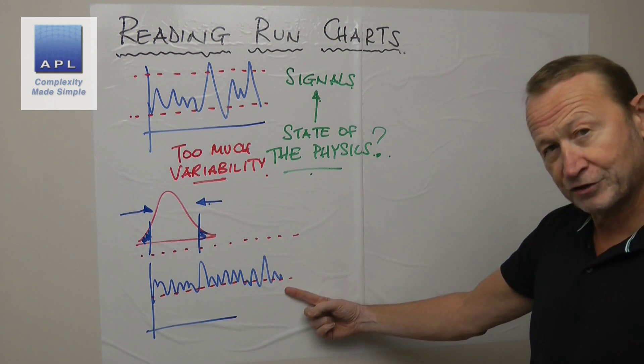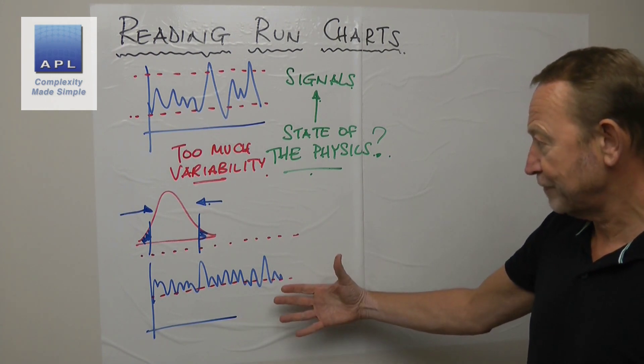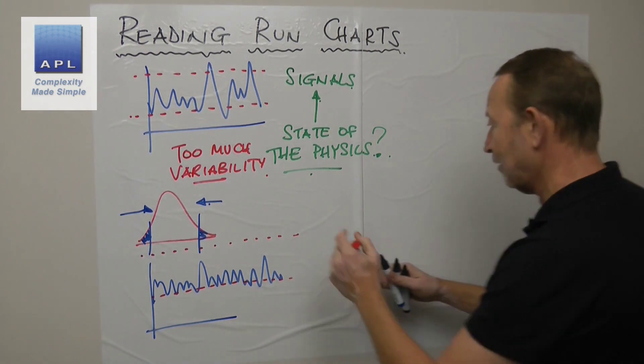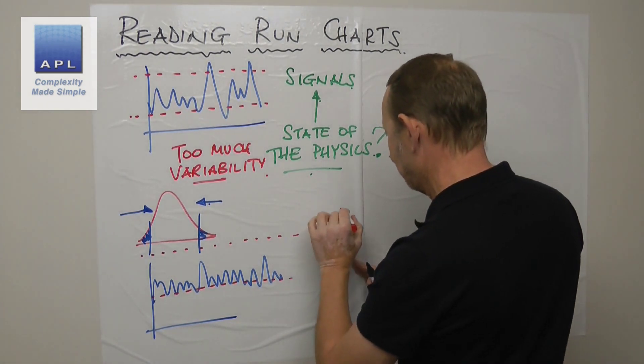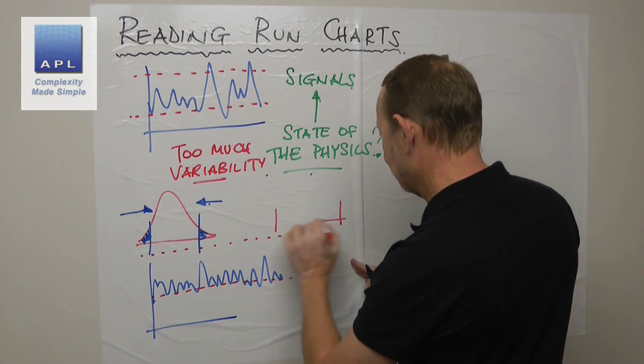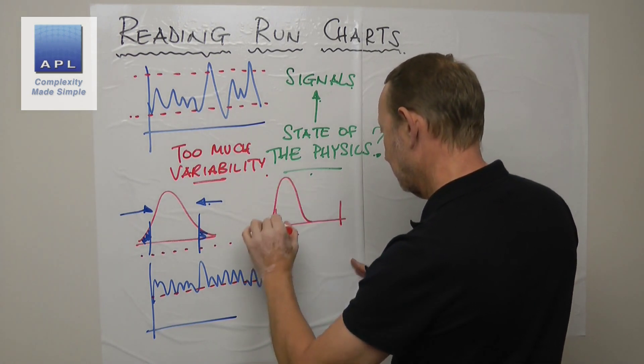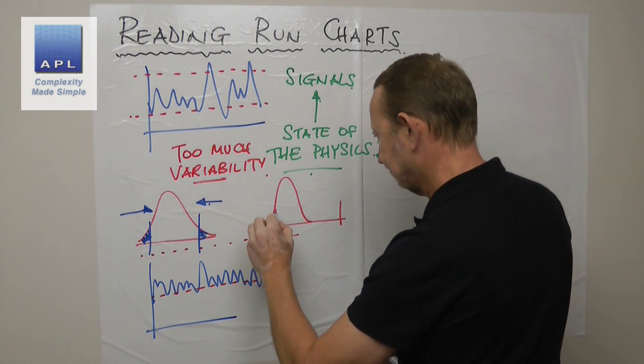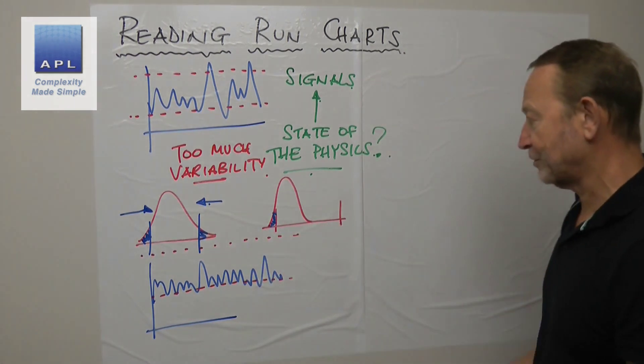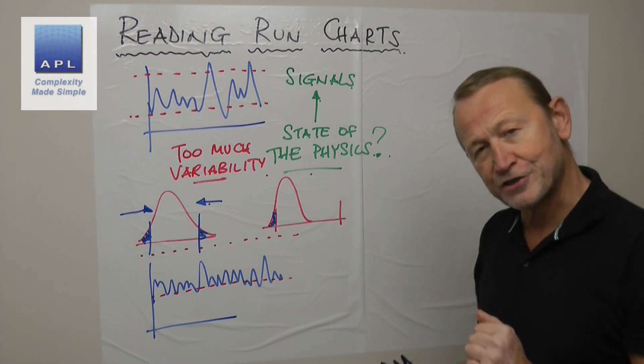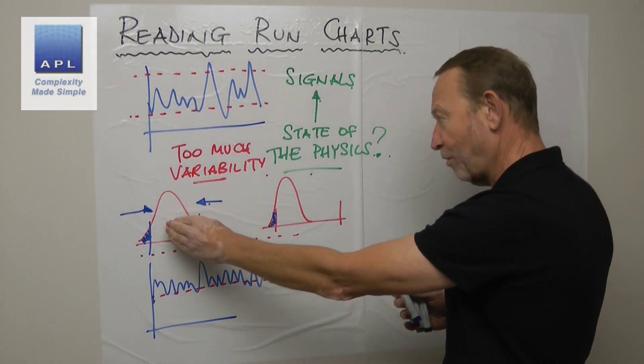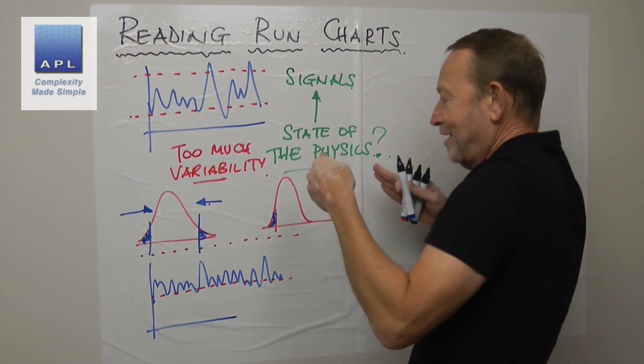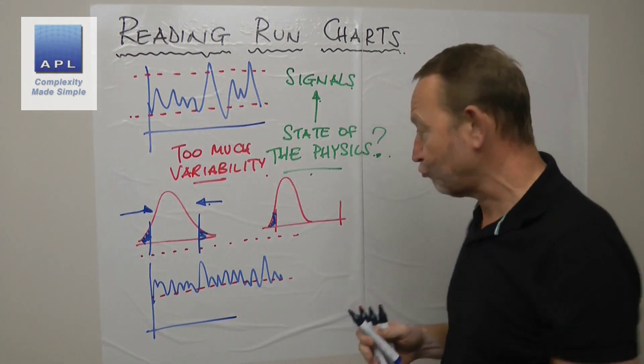What's the state of your physics? Well the state of your physics is you're off target. We're sitting on the lower tolerance and I've got defects out here. So what have I got to do? I've got to shift the center. Now that's a different problem to this. That's the state of my physics, that's the physics that I've got to transform.